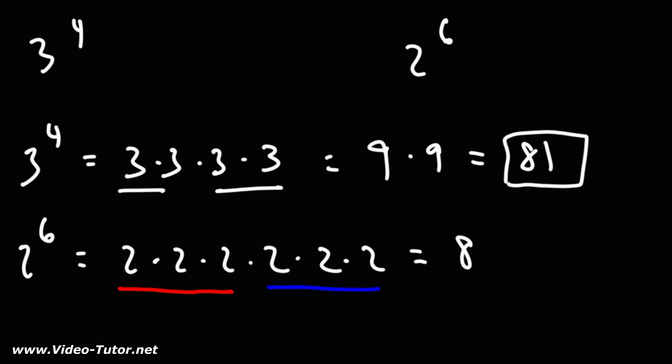And the same is true for the other remaining three 2's. That's equal to 8. And 8 times 8 is 64. So 2 to the 6th power, if you multiply six 2's, you'll get 64.